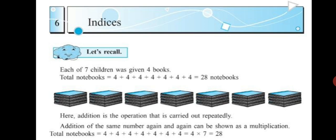Let's recall: each of 7 children was given 4 books. To find the total number of books, you add 4 books 7 times to get 28. Addition of the same number again and again can be shown as a multiplication. The total number of books is 4 added 7 times, which equals 4 into 7 equals 28.